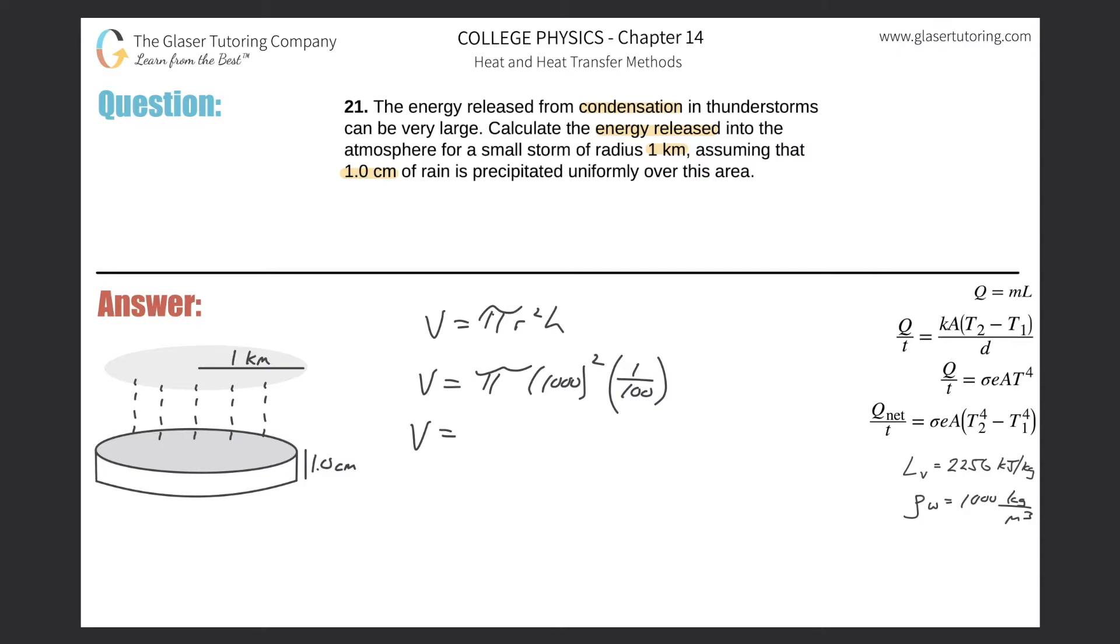Now we can do the calculation. Let's grab the calculator: π multiplied by 1000 squared, multiplied by 1 over 100. We get a value of approximately 3.14 times 10 to the fourth.